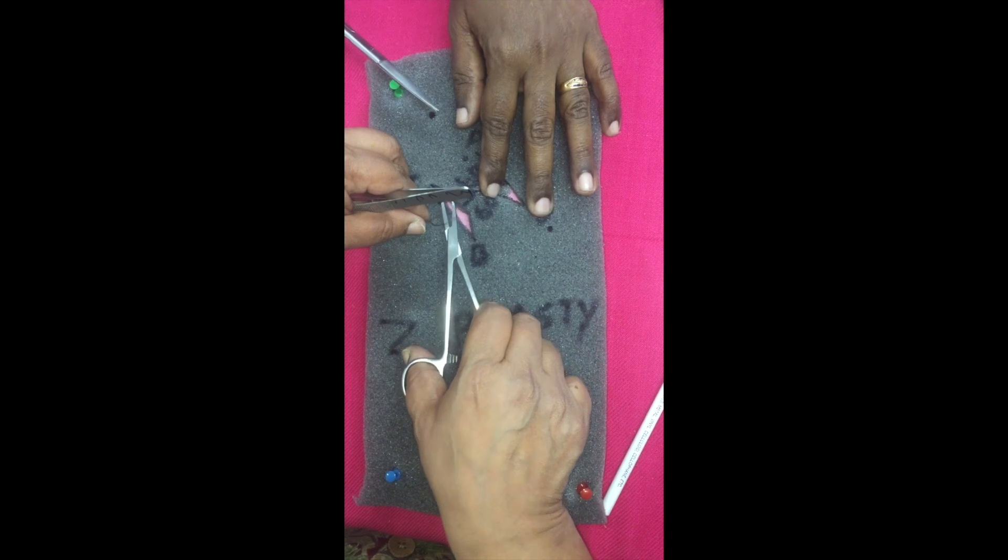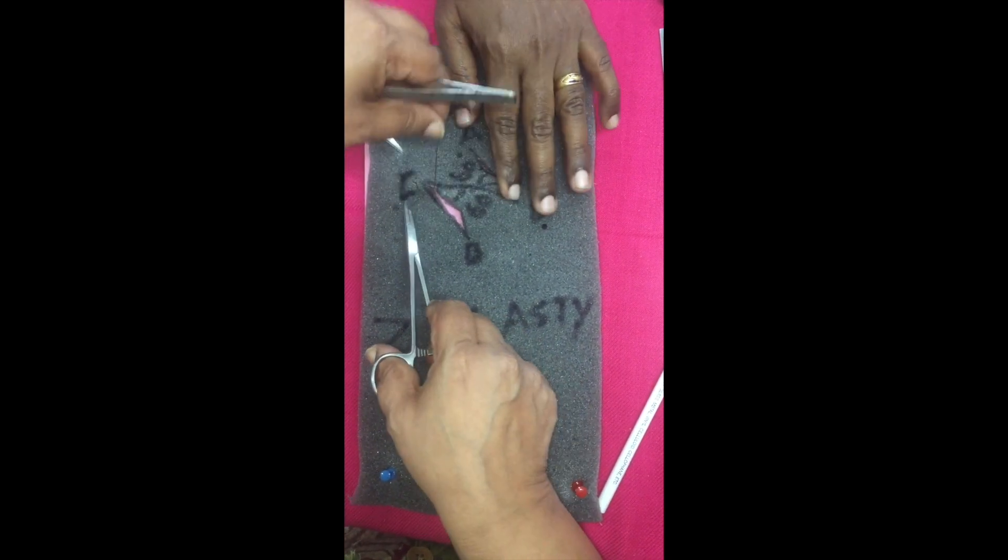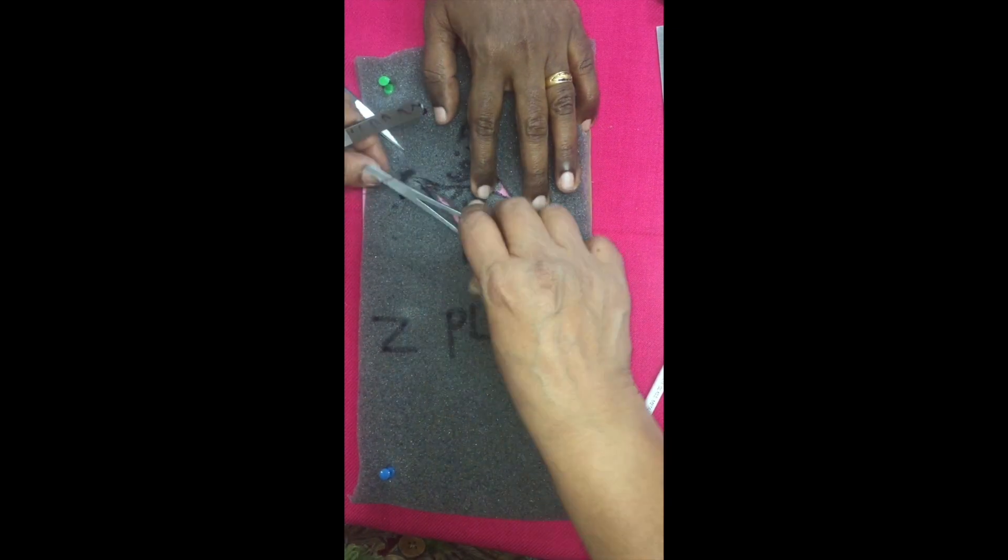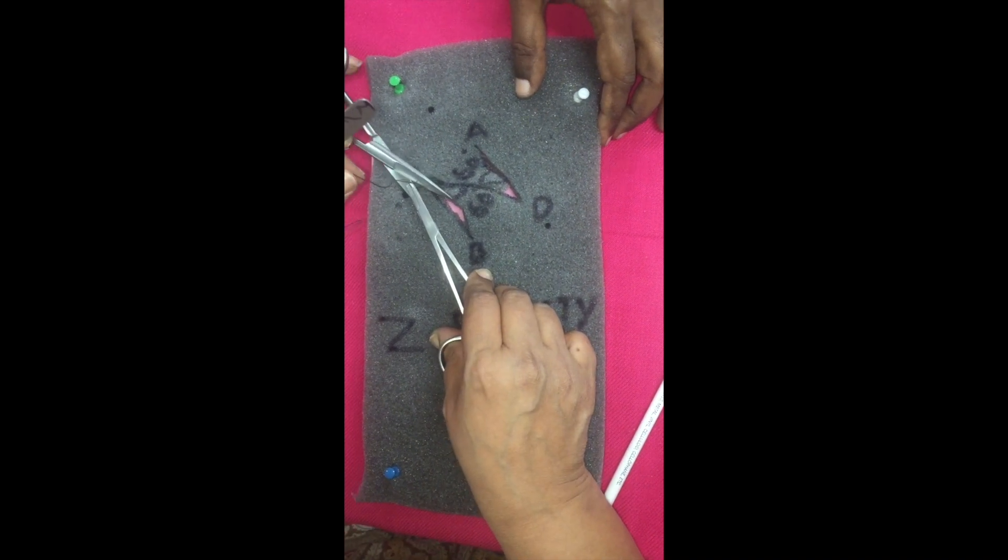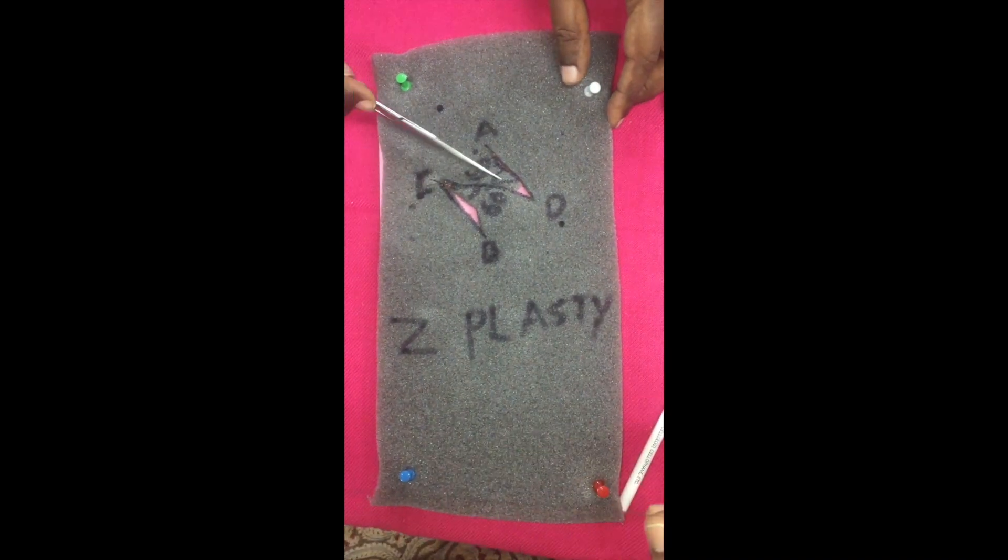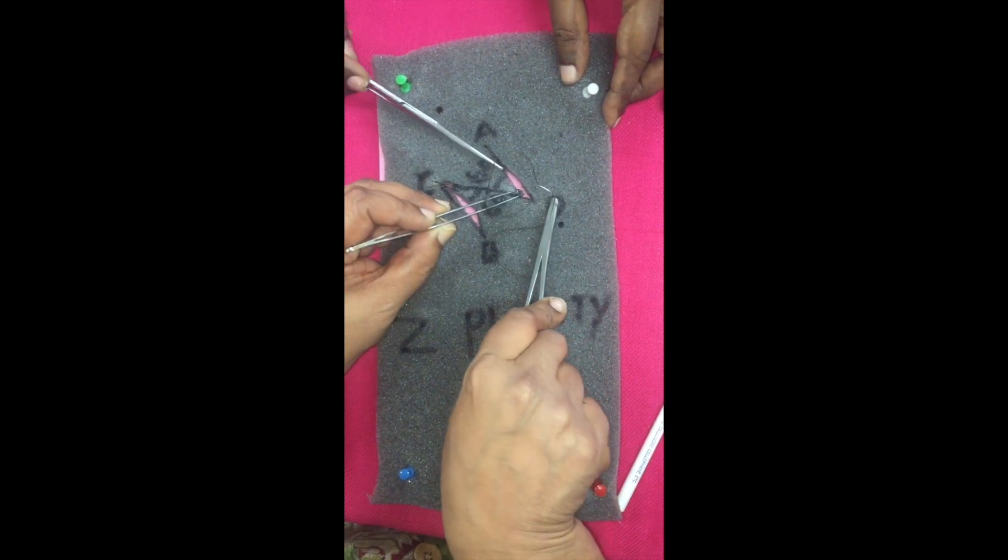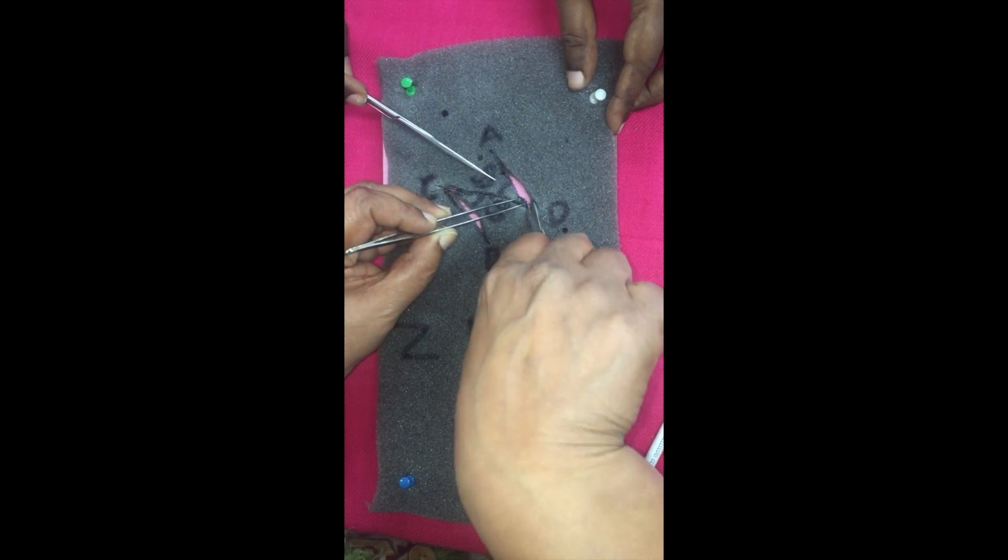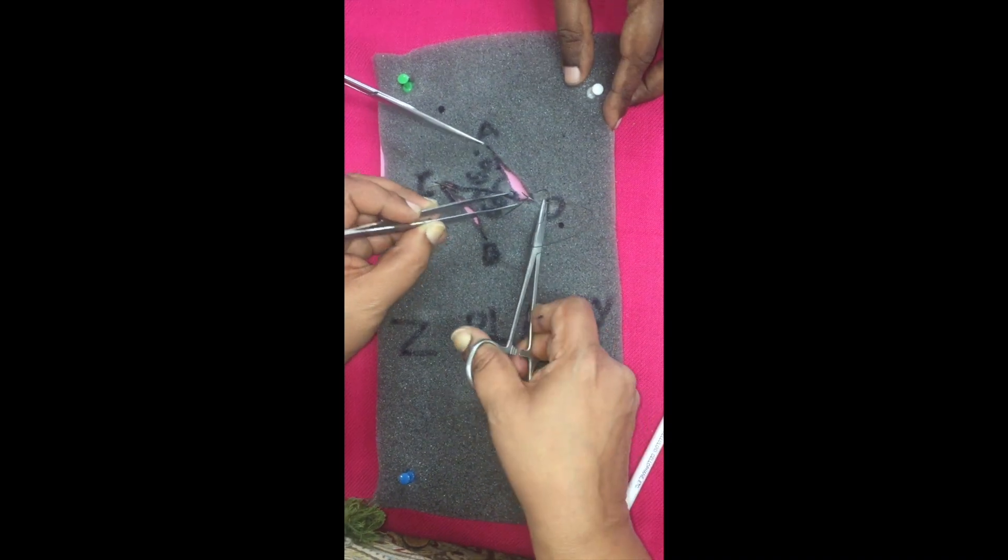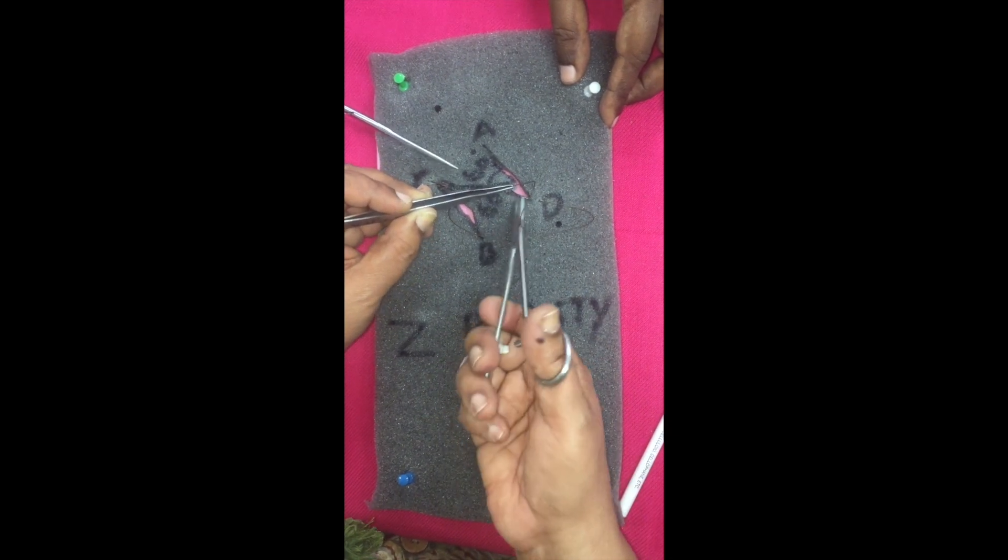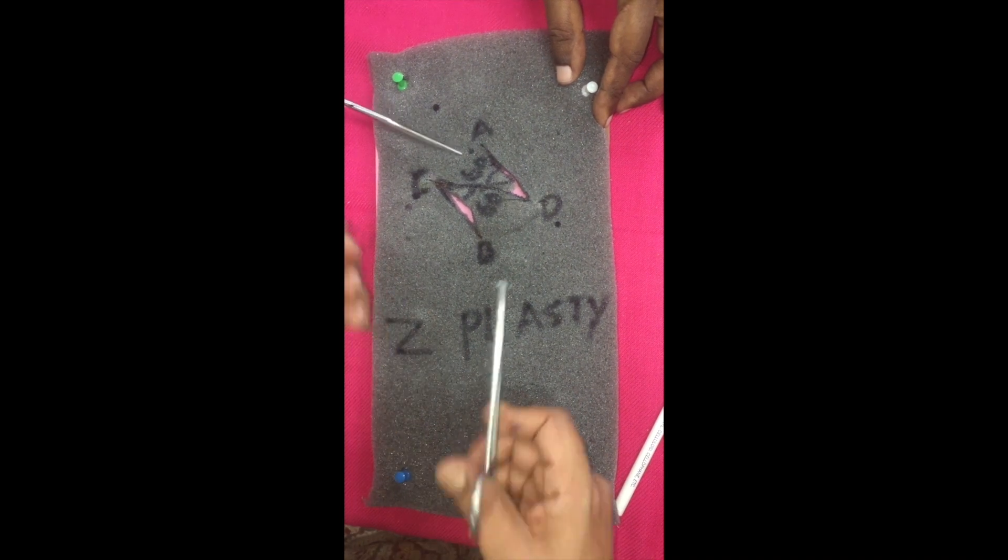You can make out now, that after the transposition, there is a break in the line of AB. This break in the line of AB is going to change the direction of the scar, the orientation of the scar, which is one of the effects of the Z-plasty. The first effect was lengthening of the contracture length of AB. We will measure that.